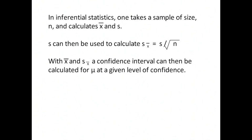In inferential statistics, one takes a sample of size n and calculates x-bar and s. s can then be used to calculate s of x-bar because s of x-bar is equal to s divided by the square root of n. With x-bar and s of x-bar, a confidence interval can then be constructed for mu at a given level of confidence.